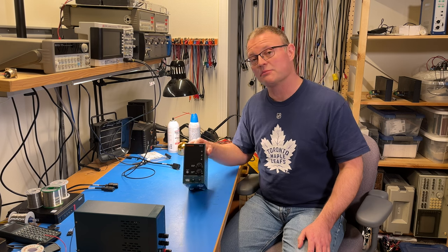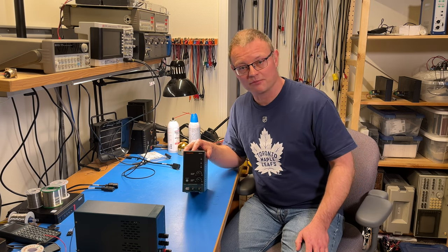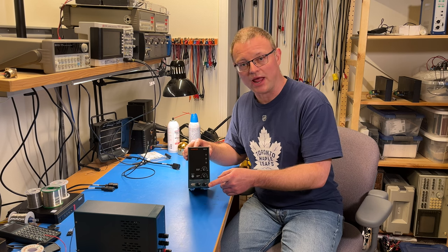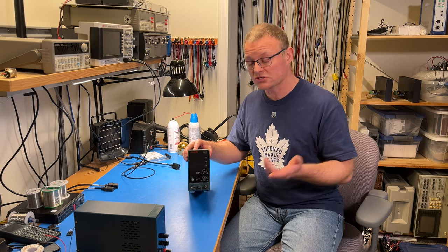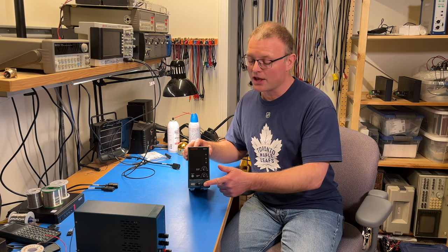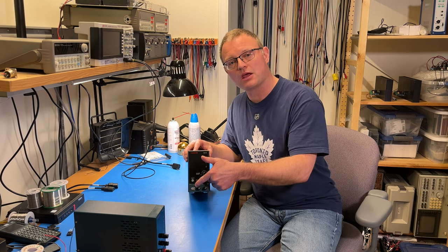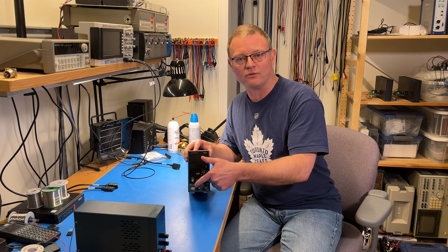This is the Hanmatek HM310. It provides 0 to 30 volts at 0 to 10 amps, so a total of 300 watts on the main output. And then it has a secondary output here that's a USB Type-A, and that provides 5 volts at 2 amps.